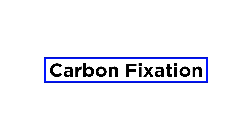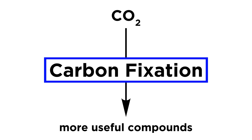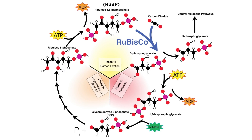If this term is unfamiliar, carbon fixation refers to the process by which carbon dioxide is converted into more biologically useful organic compounds within living organisms. Again, we already have a general understanding of this process, but there are some key differences between certain groups of plants that must now be elucidated.